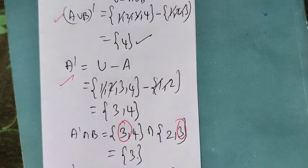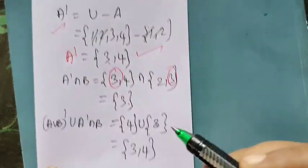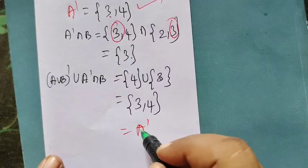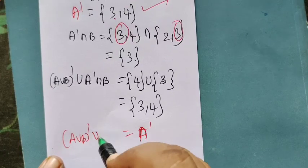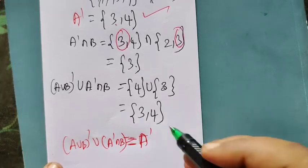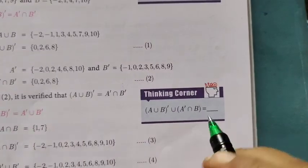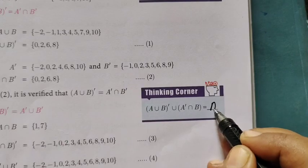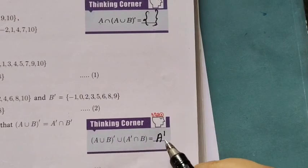{3,4} is nothing but A dash. Correct? This is A dash. So this is A dash. So final thinking corner: A union B whole dash union A dash intersection B. This is equal to A dash. So this is how we can change this. This is A dash. Correct. A dash.